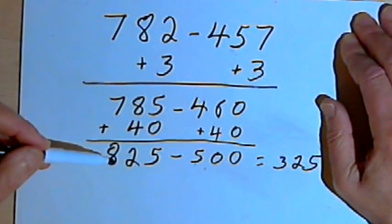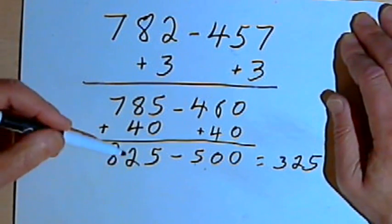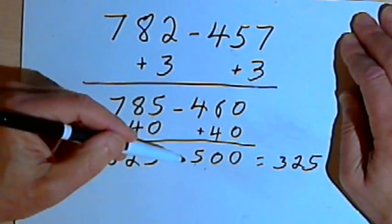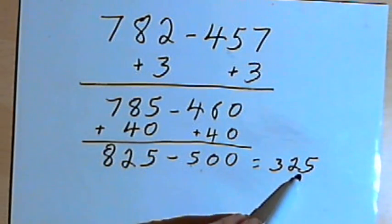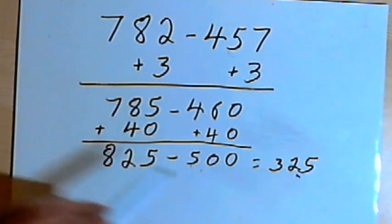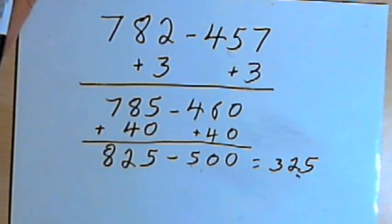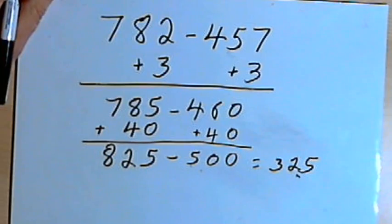And now all I have to do is subtract my hundreds, 825 minus 500. So 8 minus 5 is 3, and I'll still have the 25. So that's the whole process. Take care. I'll see you next time.